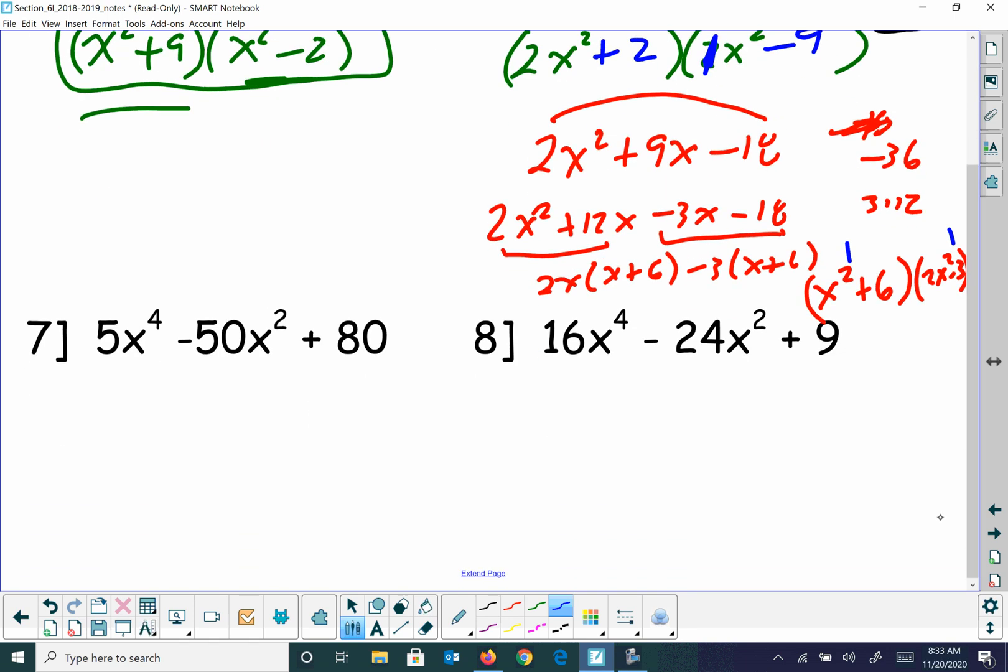All right, next problem. It looks like I could factor 5 out of everything first. So I get x to the fourth minus 10x squared and then plus 16. So then I can factor this. I see this one pretty easily. I'm going to say x squared minus 8 and x squared minus 2. That totally works. There's no further I can go because those are not the difference of two squares.